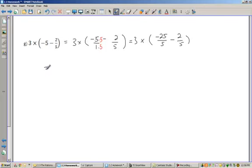I can now combine the fractions because I have a common denominator, so this is 3 times a negative 25 minus a 2, so I get a negative 27, 5. And again, I can simply multiply these. This is like 3 over 1 if you want. So this is 3 times negative 27, which is a negative 81, and then 5 times 1, which is 5. And so I get a negative 81 divided by 5. That's my answer.